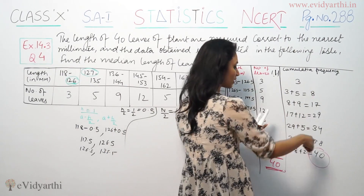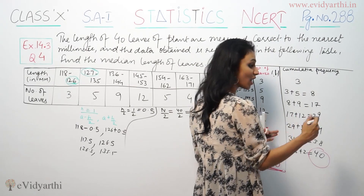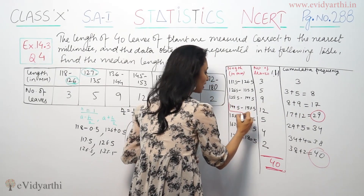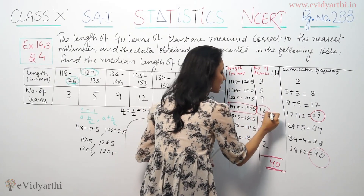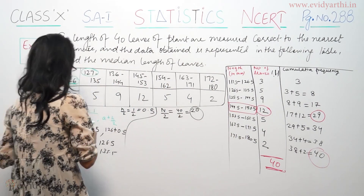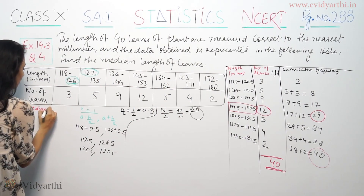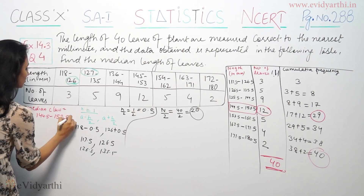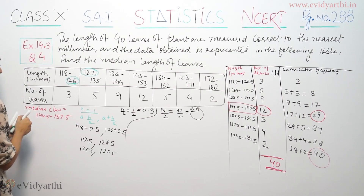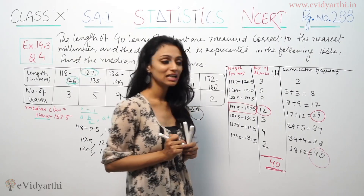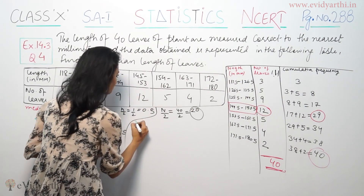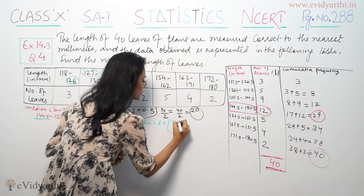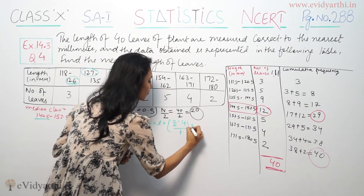So the cumulative frequency 29 corresponds to the median class. Therefore, the median class is 144.5 to 153.5. The lower limit of this class is 144.5. The median formula is: Median = L plus (n/2 minus cumulative frequency) divided by frequency, multiplied by h.